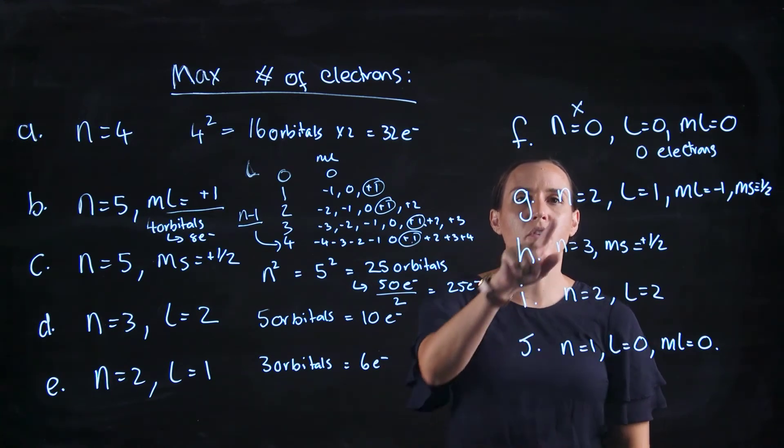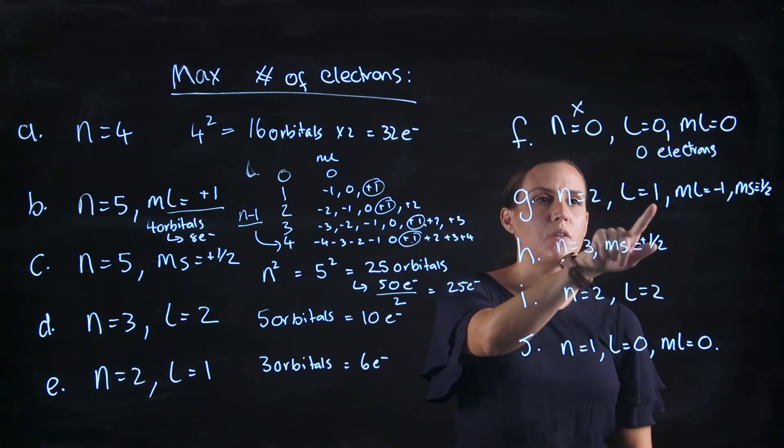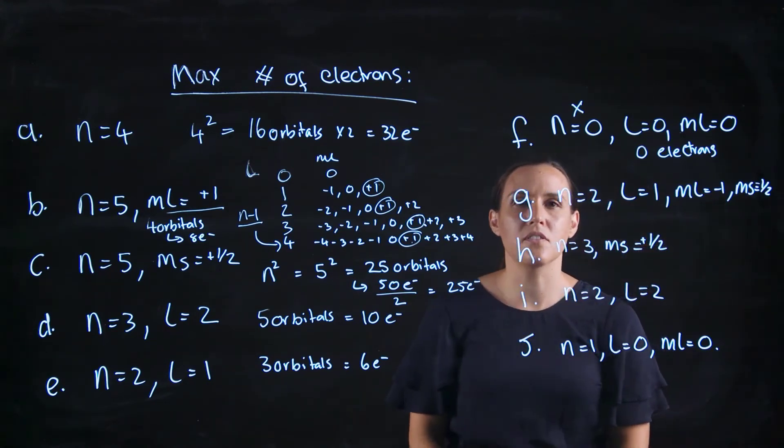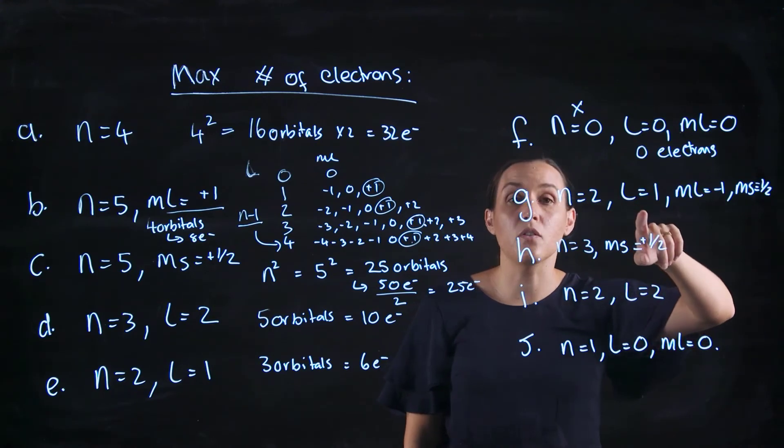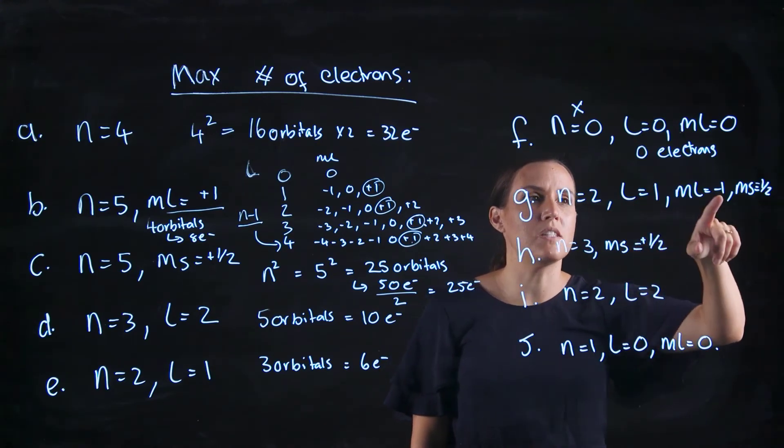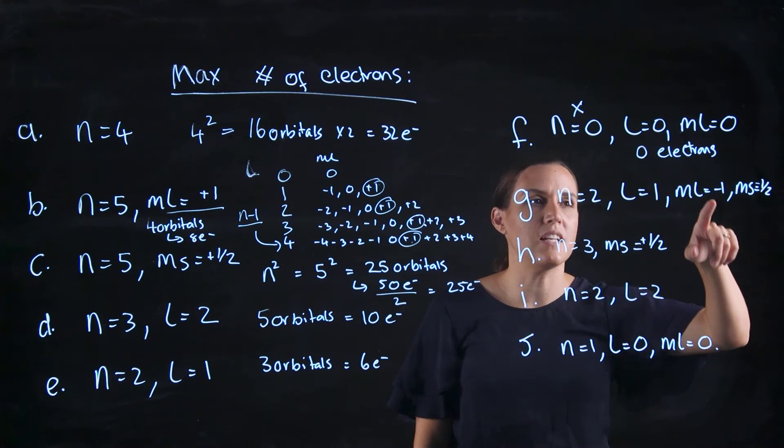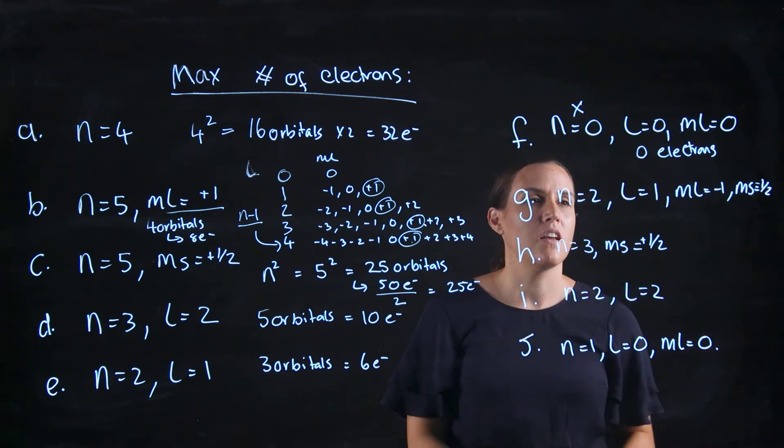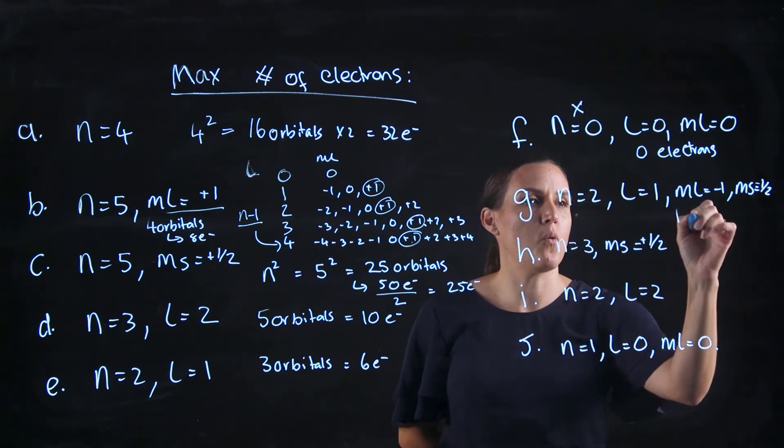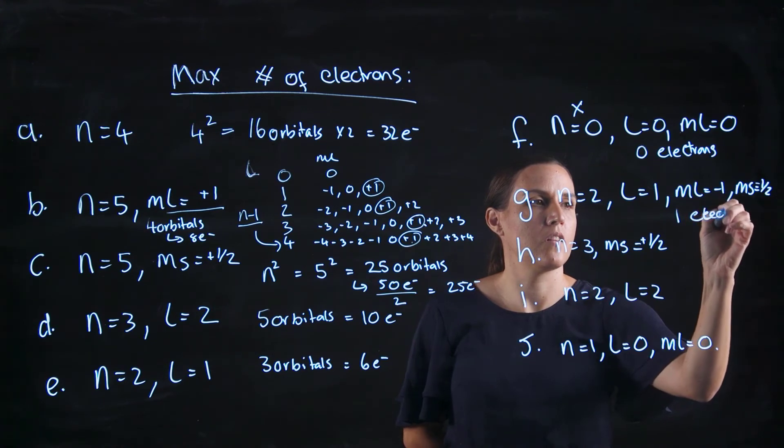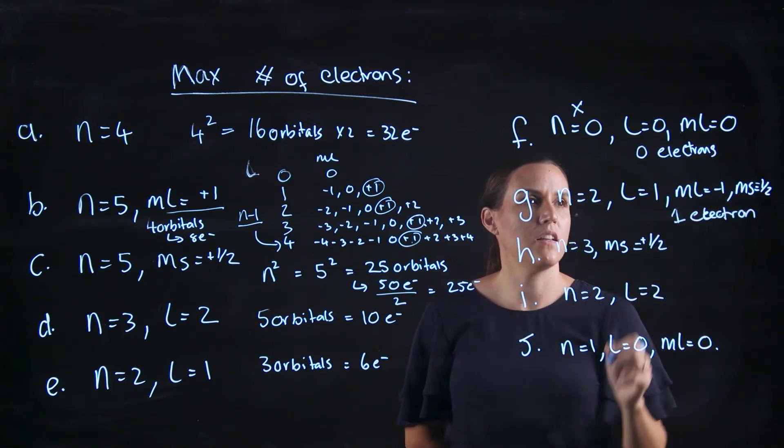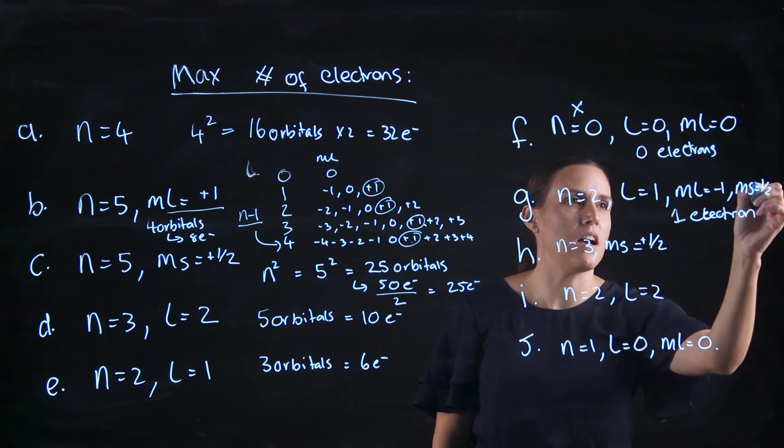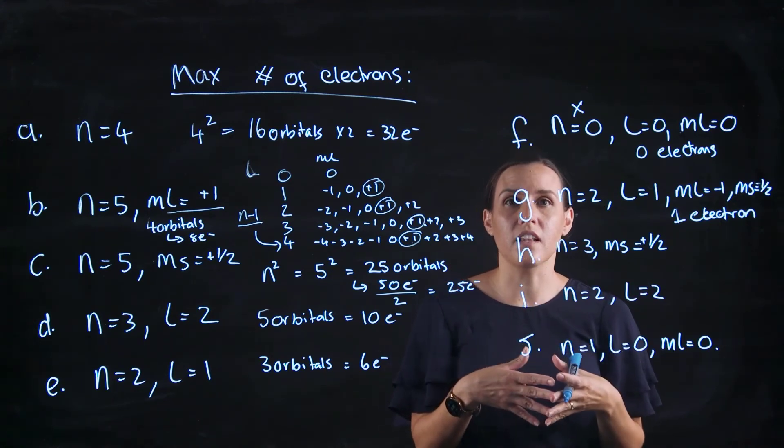Now we've got n equals 2, l equals 1, ml equals minus 1, and ms equals a half. So we've got n equals 2, l equals 1, so we're looking at the p orbitals now. And we're looking specifically at one of those p orbitals that has the designation minus 1. And in that we're looking at something that has a half spin. So that's just looking right in at one electron. So one orbital, but we've got the ms of plus a half, or minus a half, doesn't really matter. So that's one of those electrons.